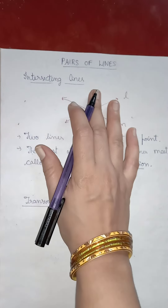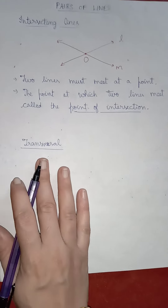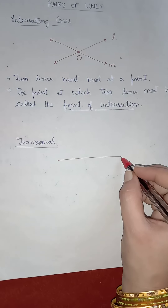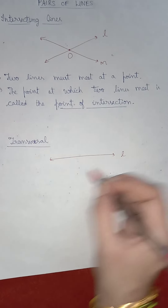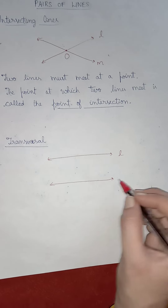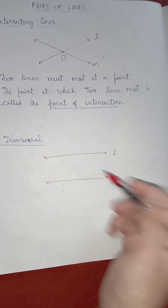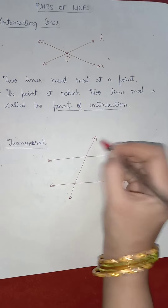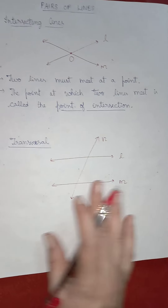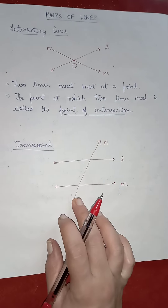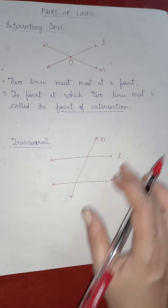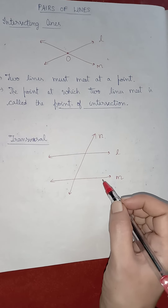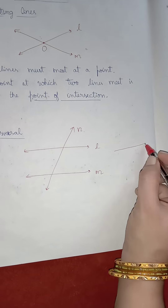This is how intersecting lines are. Now let us see what a transversal is. Suppose you have two lines L and M, and you have one more line passing through both of these lines. Let this line be N. Then line N is the transversal for lines L and M. The lines L and M need not always be parallel — they can be non-parallel.